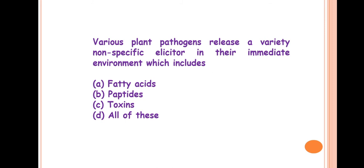Next question is: various plant pathogens release a variety of non-specific elicitors in their immediate environment which includes? So the answer is all of these. The non-specific elicitors produced by different pathogens are fatty acids, then peptides and toxins. These are the non-specific elicitors. Elicitors are molecules released by the pathogen during host plant and pathogen interaction. These may be part of the pathogen or some molecules released by the pathogen to its immediate environment during host plant and pathogen interaction.